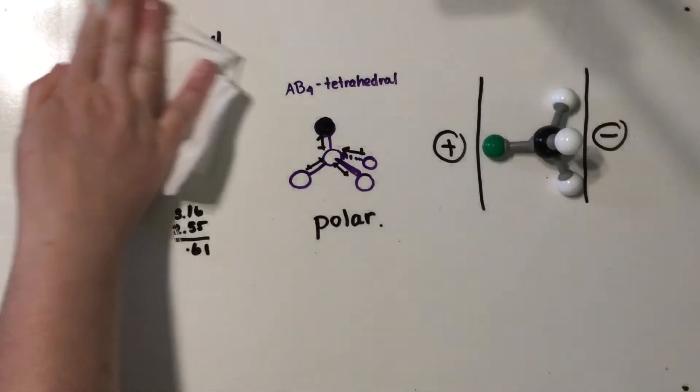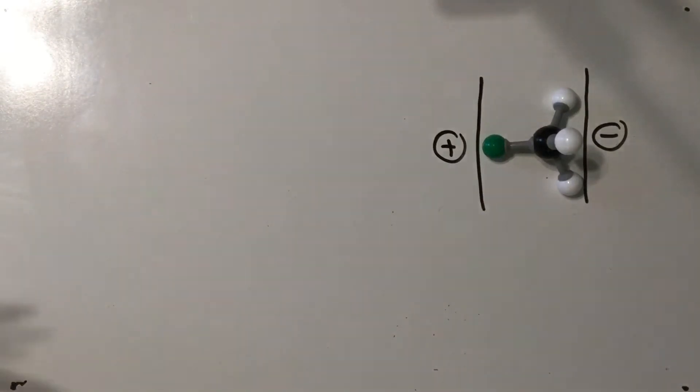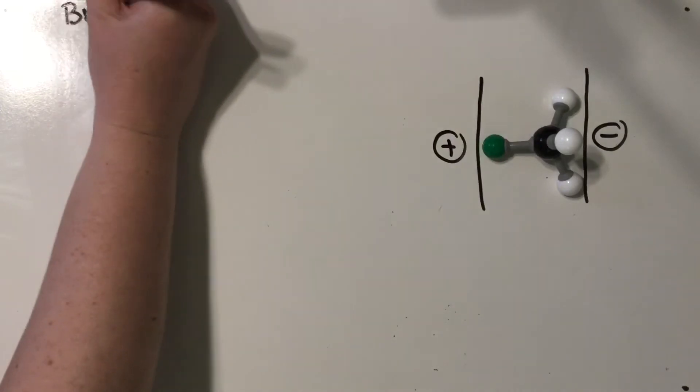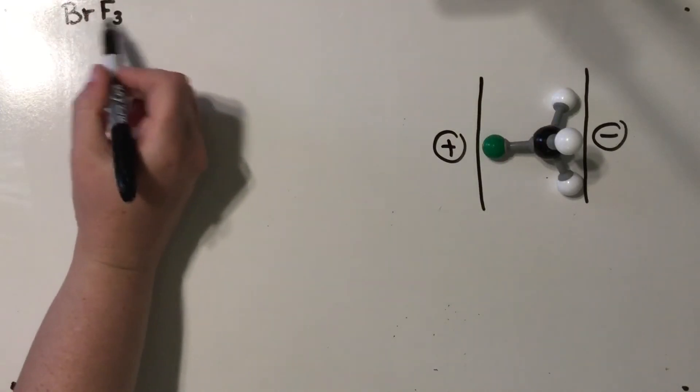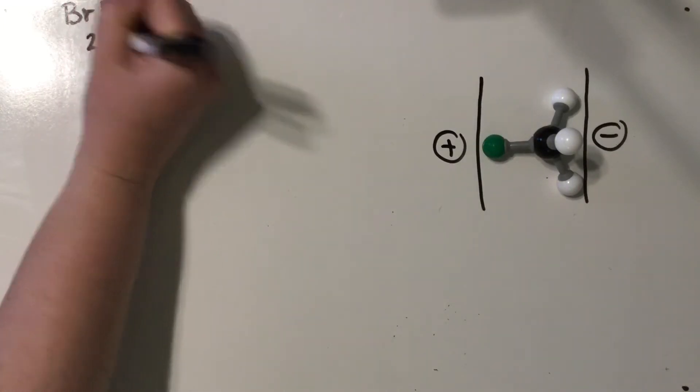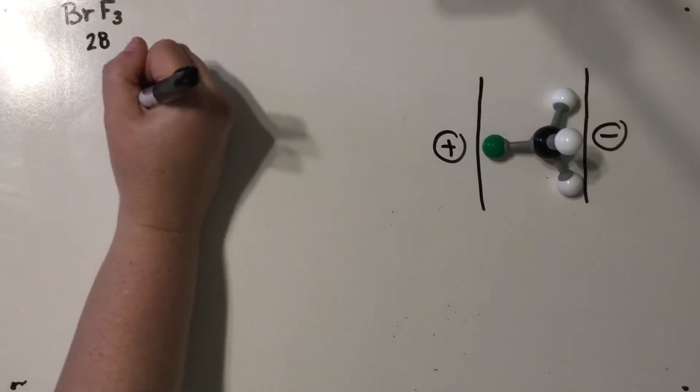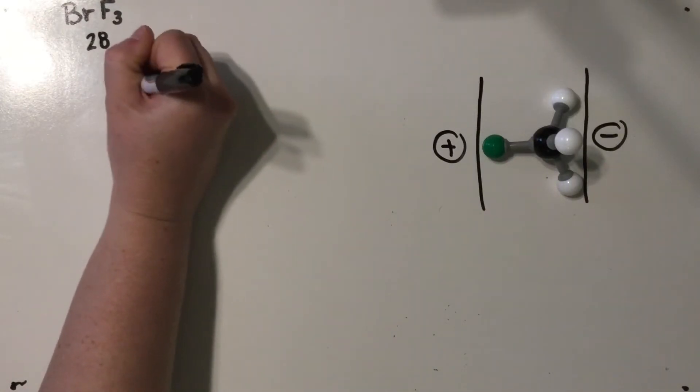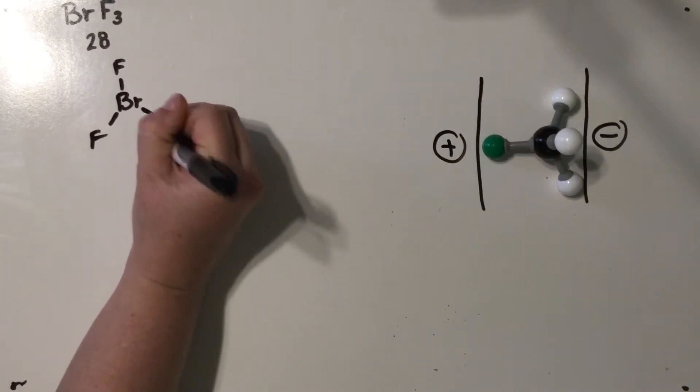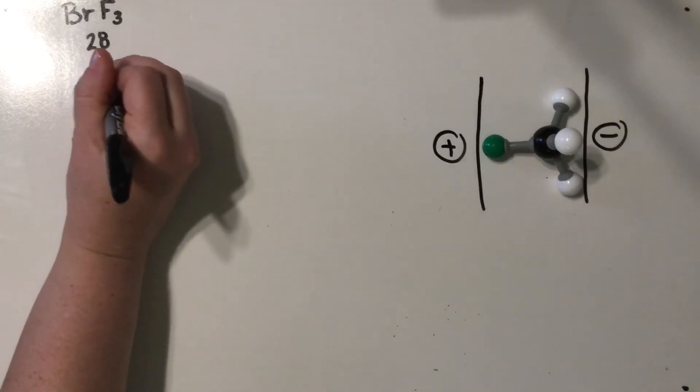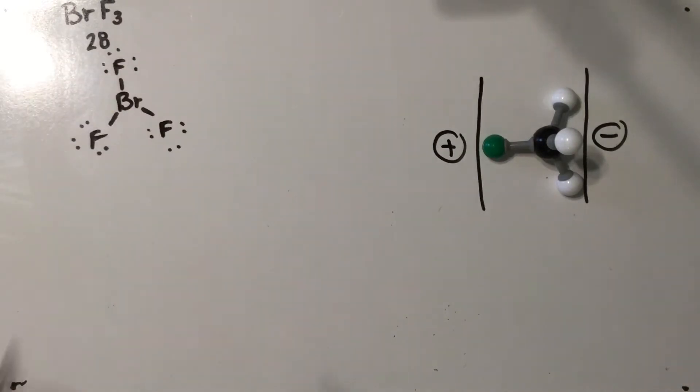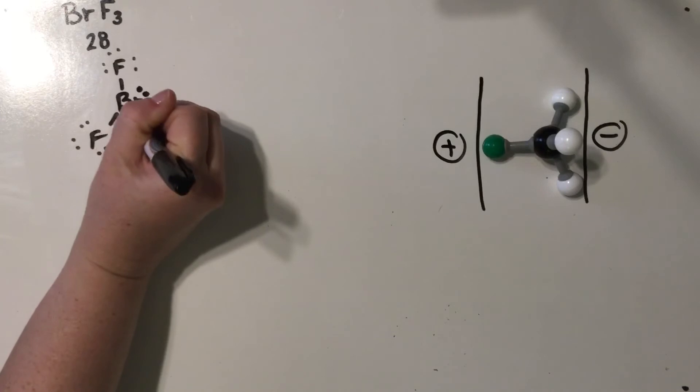The next example I want to talk to you about is actually going to wind up with an expanded octet. We're going to look at BrF3. Now this is full of halogens here. Seven times four, we would have a total of 28 valence electrons to work with, which means if we're just looking at the electron domains, even though we only have three atoms bonded to our center atom, that's only going to give us a total of 24, 25, 26, 27, 28.